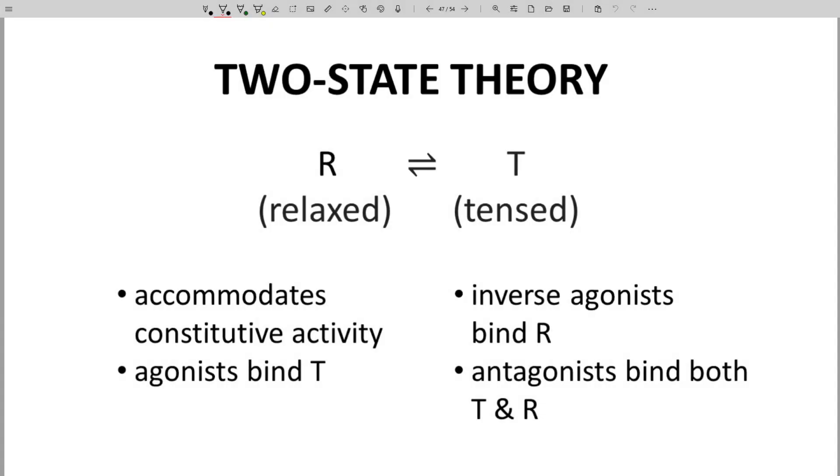One theory is the two-state theory. In the two-state theory, the receptor is in equilibrium between two states – one relaxed and the other tensed. When in the tensed state, the receptor causes a response.